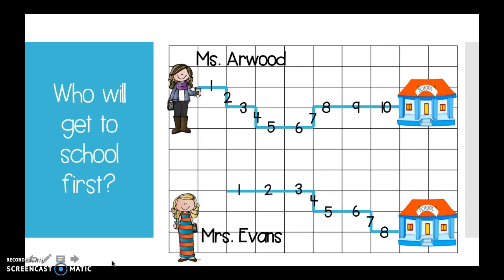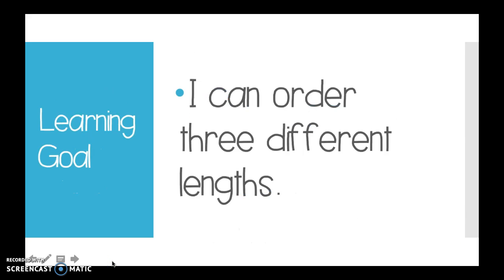All right. For this one, for this measurement, we didn't have to look at objects to compare them. We had to look at a path or how long it took them to get to a different place. We used the blocks behind the path to help us figure out how long it was. Today, our learning goal says I can order three different lengths. That just means you can put them into order, maybe from shortest to longest or longest to shortest.